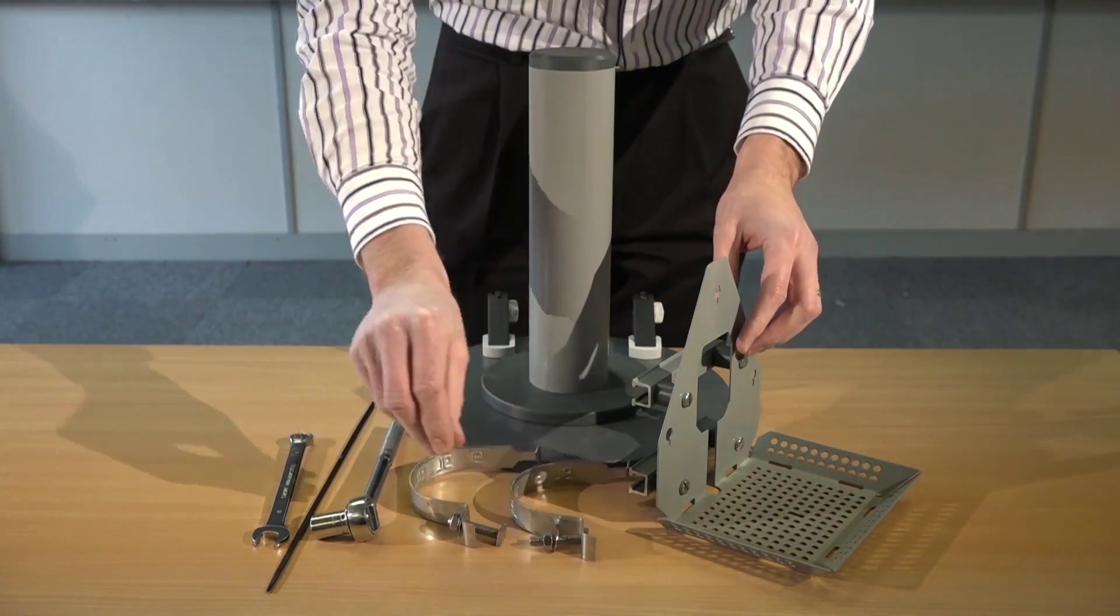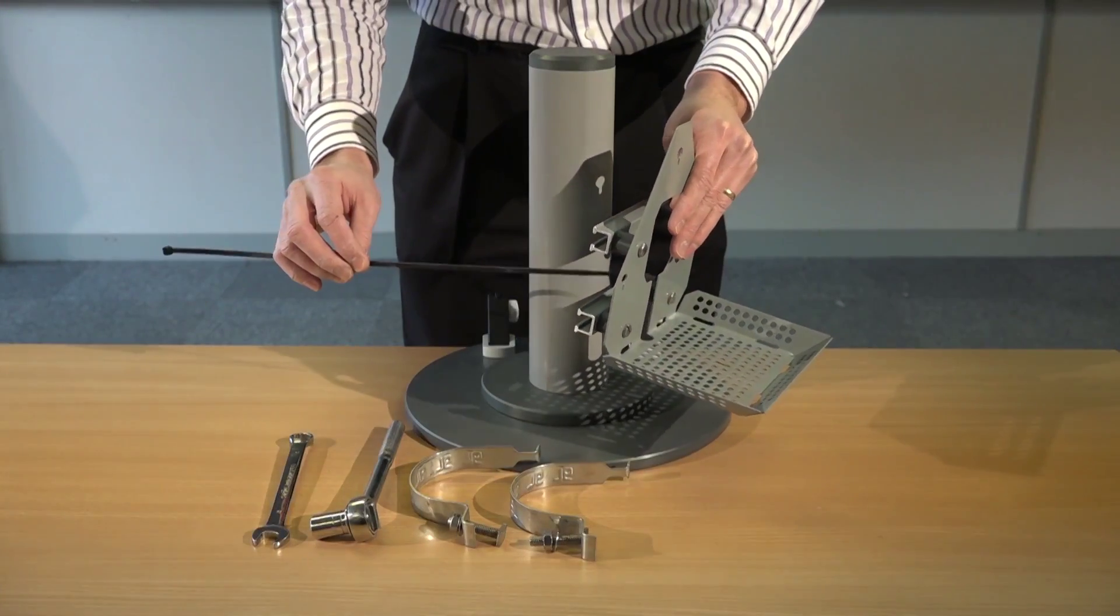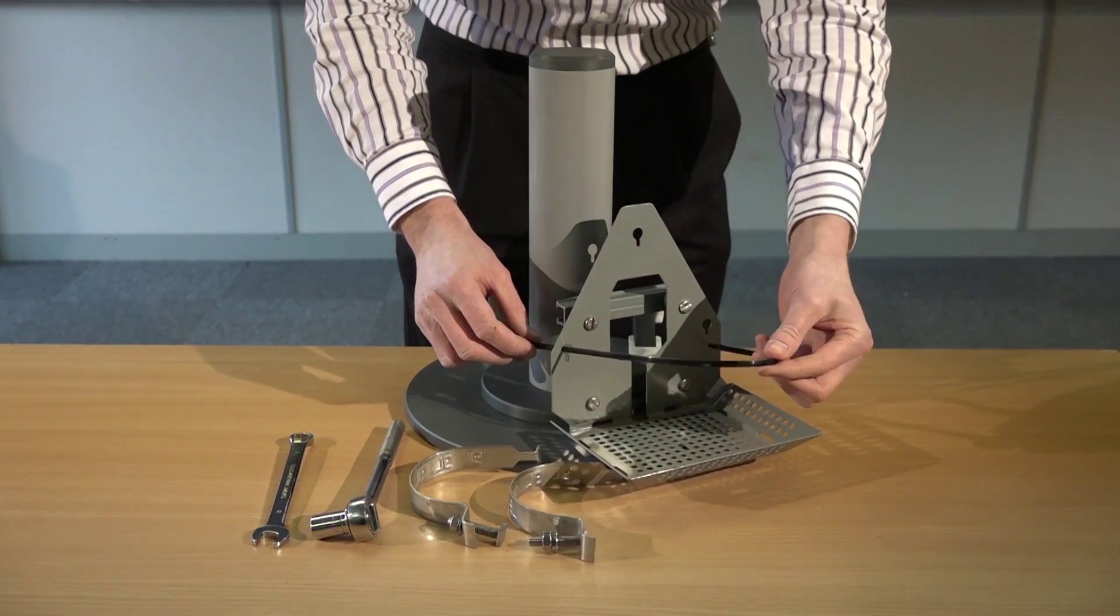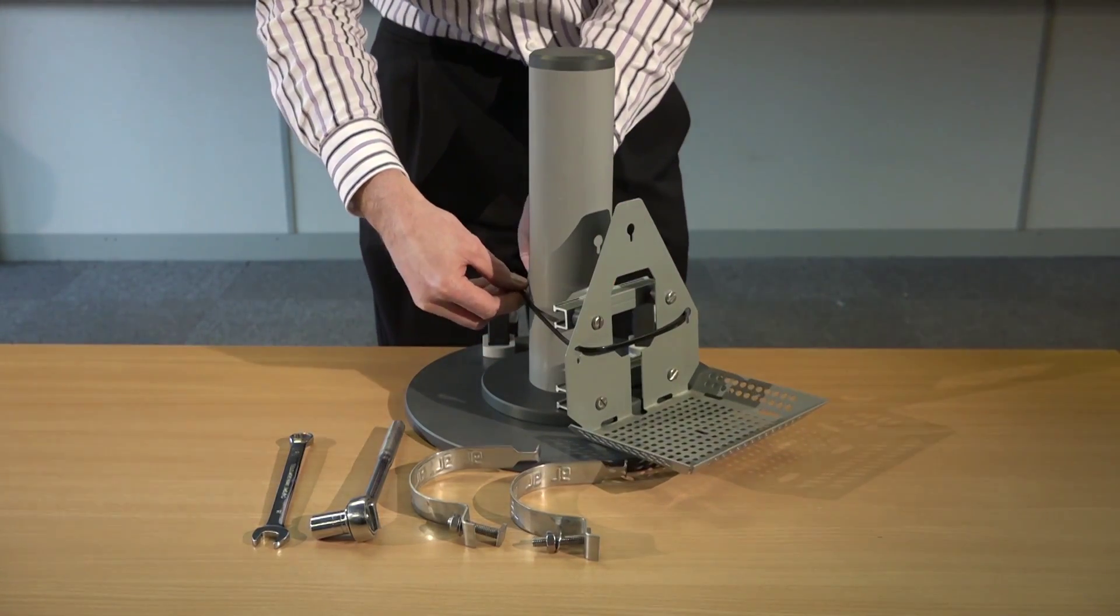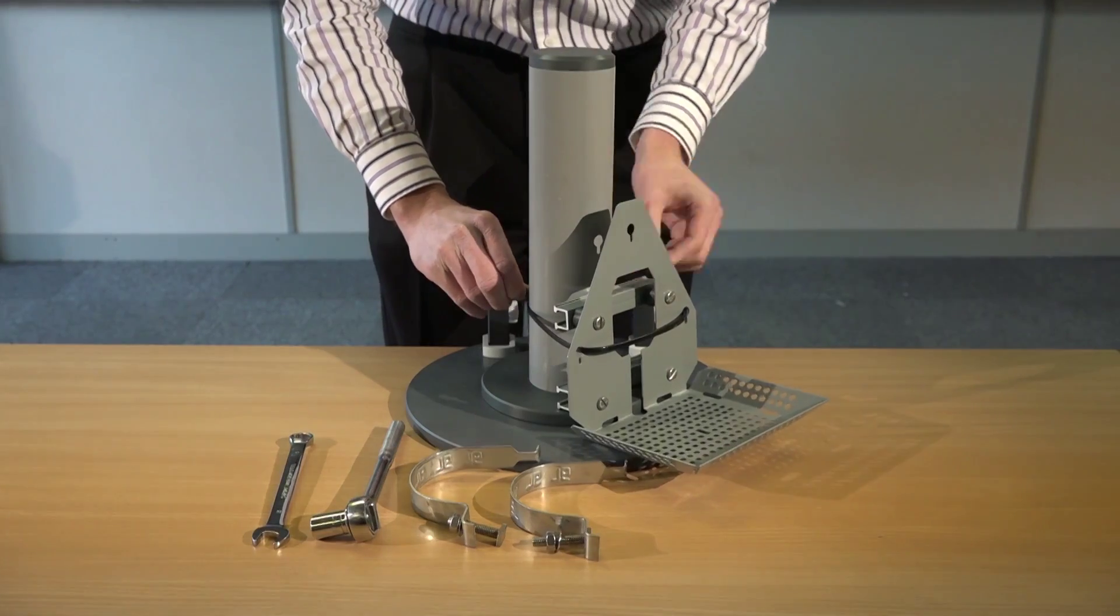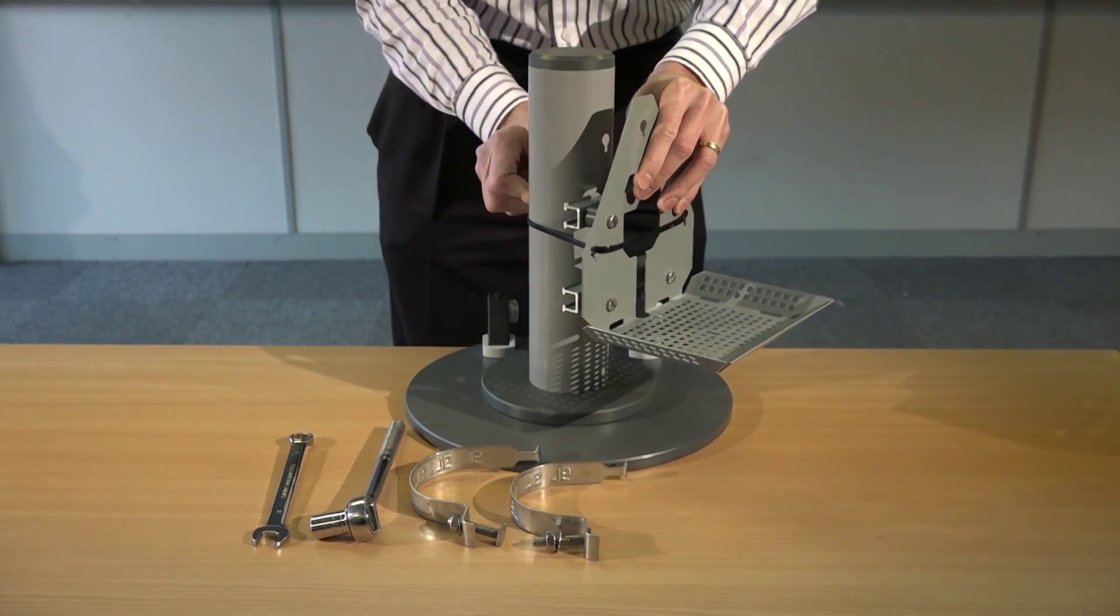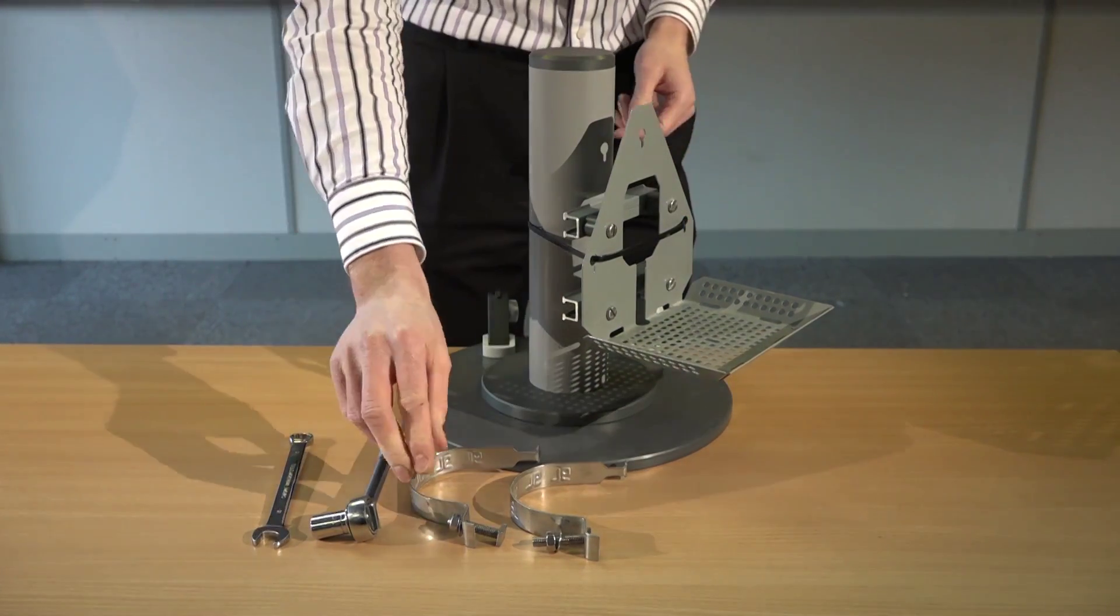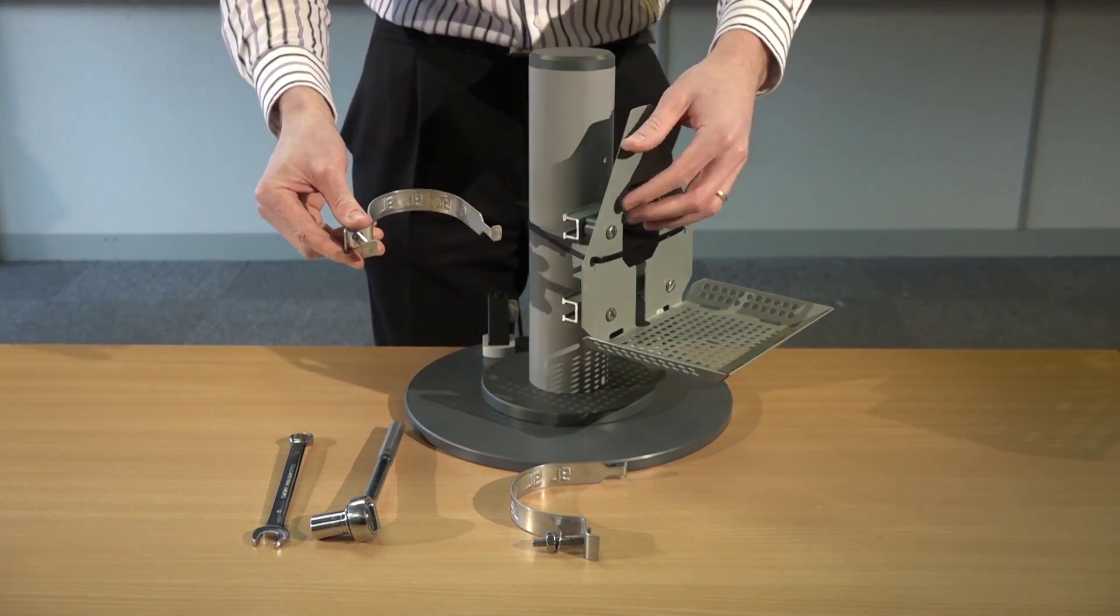I'm using the 76mm. Again, as with the banding method, the easiest way to secure the unit is temporarily with a cable tie. Simply loop through the two holes onto the post and adjust to height. Once in position, use the post clip.